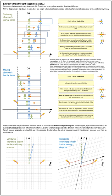In physics, the relativity of simultaneity is the concept that distant simultaneity, whether two spatially separated events occur at the same time, is not absolute but depends on the observer's reference frame.